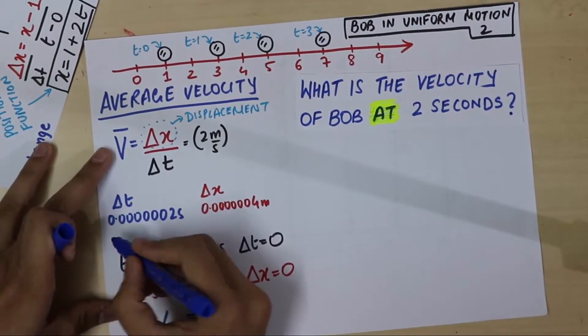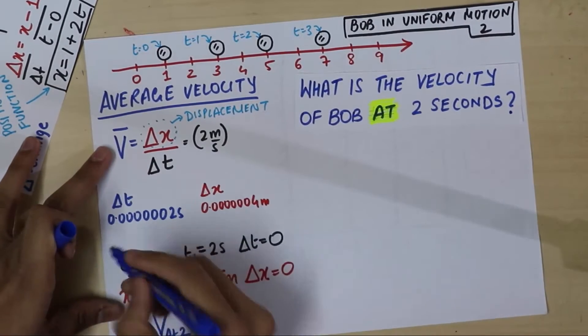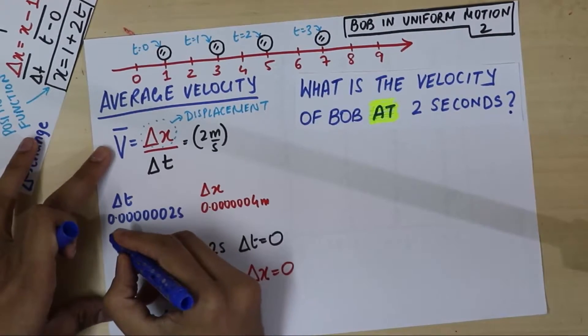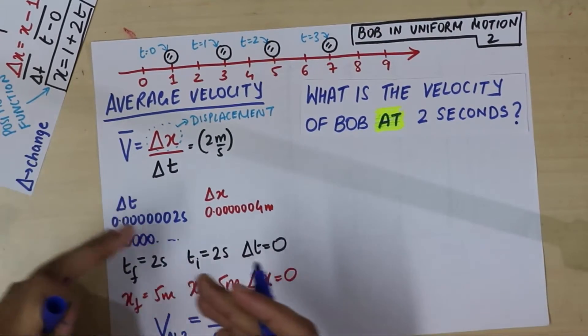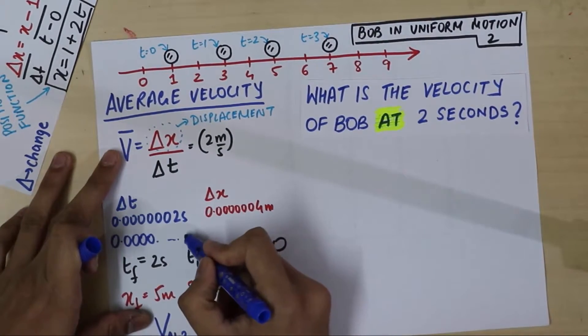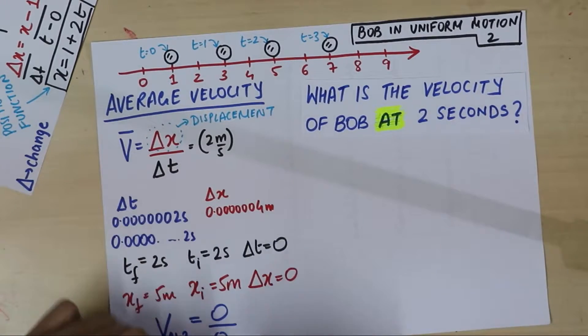Then, delta x will also be 0, 0, 0, 0, 1000 zeros in between, and 4 meters.